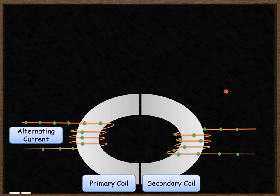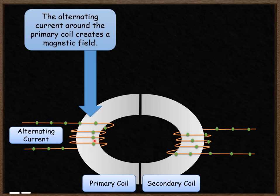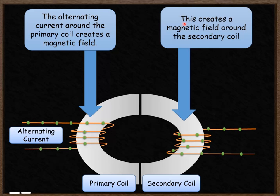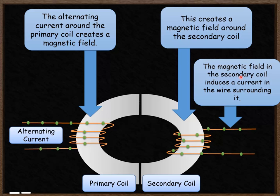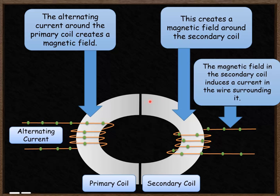The impact on the secondary coil of this magnetic field moving around is that the wire around the secondary coil then has a voltage induced in it. The alternating current around the primary coil creates a magnetic field, which creates a magnetic field around the secondary coil, and the magnetic field around the secondary coil induces a current in the wire surrounding it. So these electrons are moved because of the changing magnetic field here, which is created by the changing magnetic field in the primary coil.